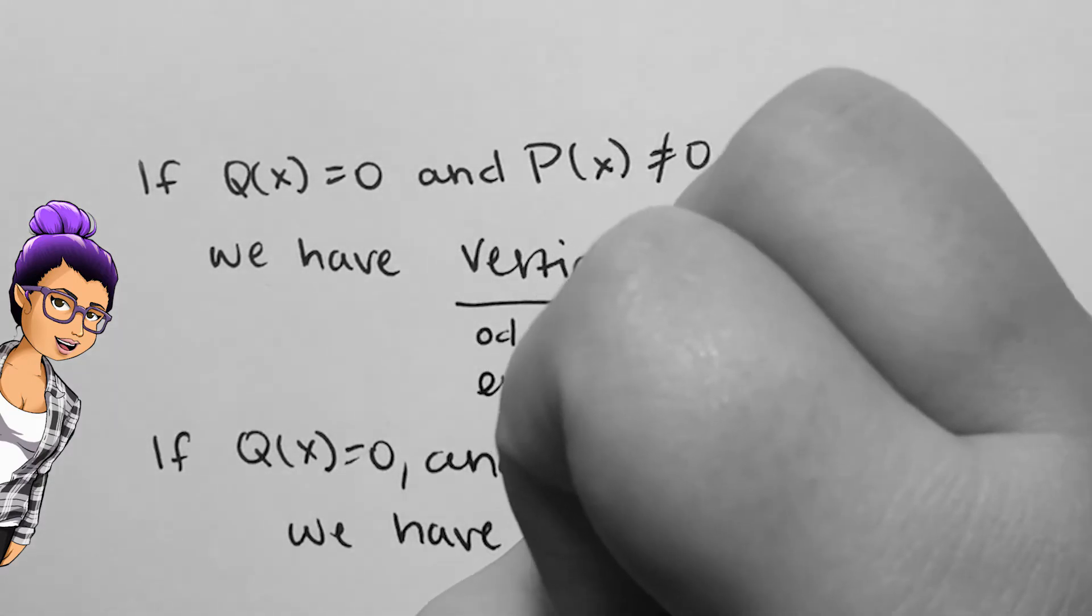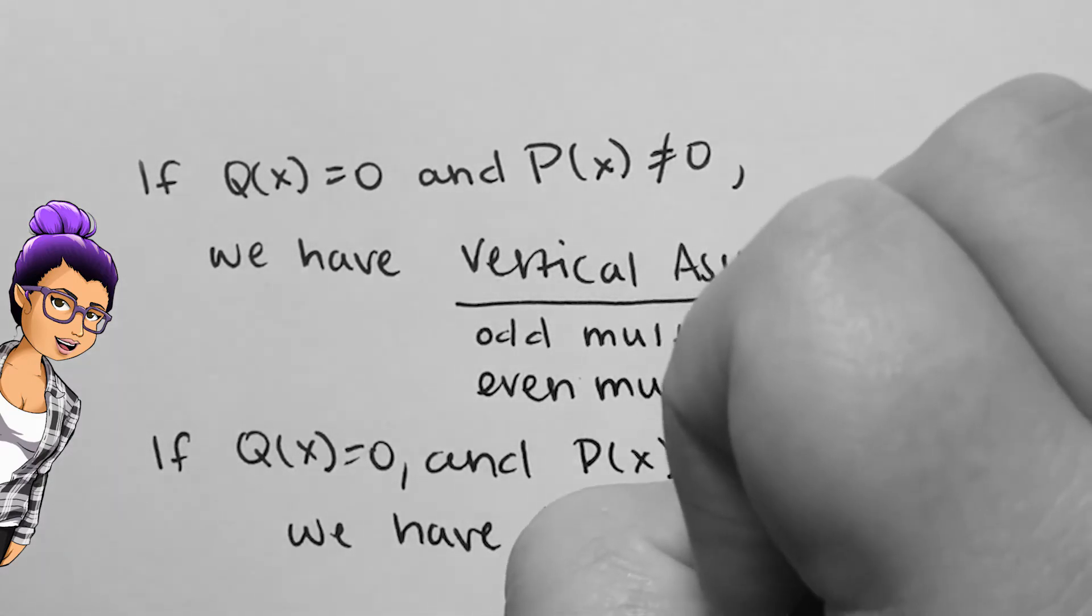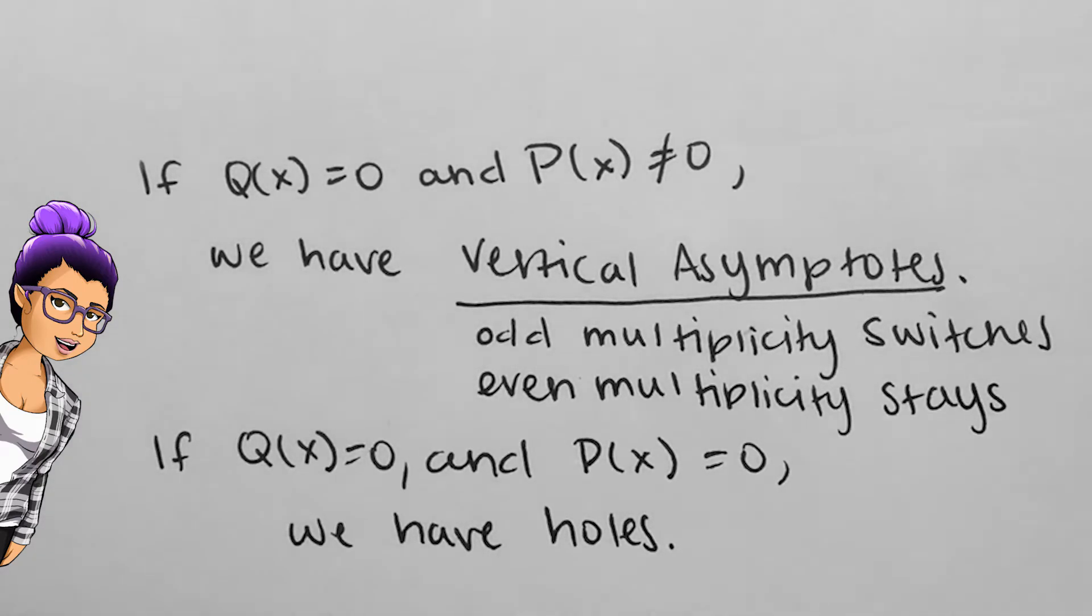If it's even, the behavior will go in the same direction, both sides of the asymptote to positive infinity, or both to negative infinity.